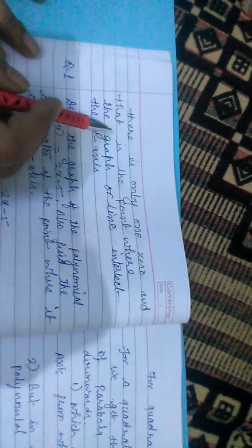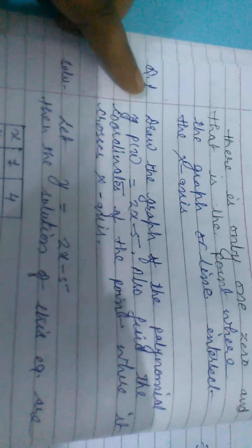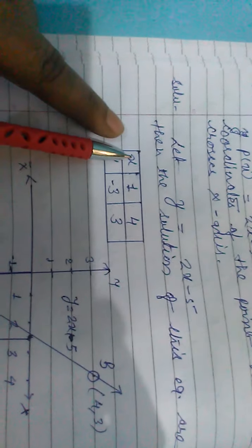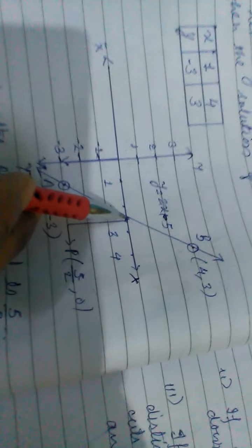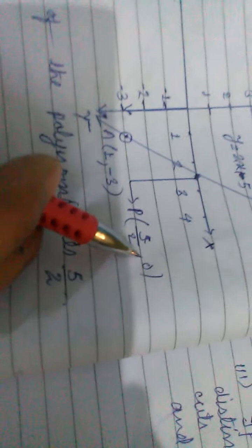Next, we will read about quadratic polynomials. For the linear case, there is only one zero, which is the point where the graph intersects the x-axis. For example, we can represent the graphical representation of p(x) = 2x − 5. For the representation, we need the solution of the polynomial, where the solutions are in the form of x and y coordinates, such as (1, −3) and (4, 3). You can see that this straight line intersects the x-axis at the point (5/2, 0). Hence, the zero of the polynomial is 5/2.